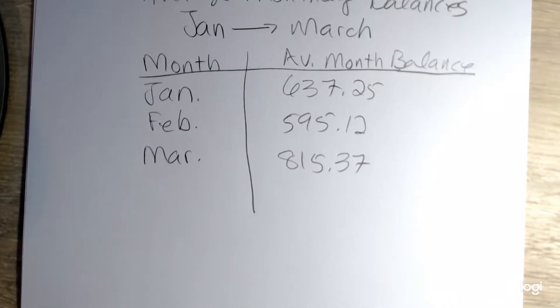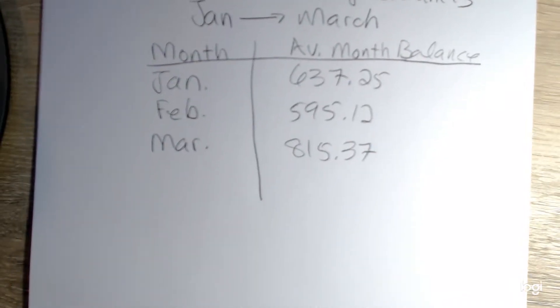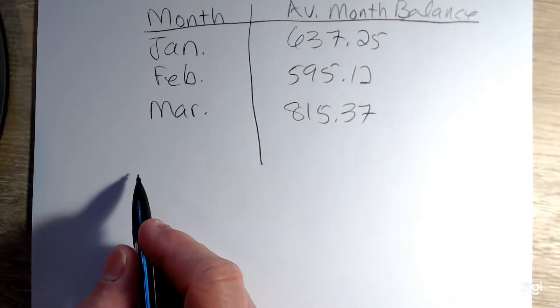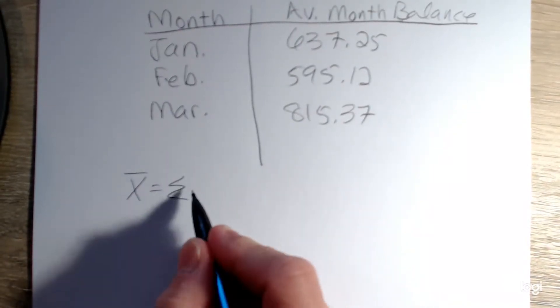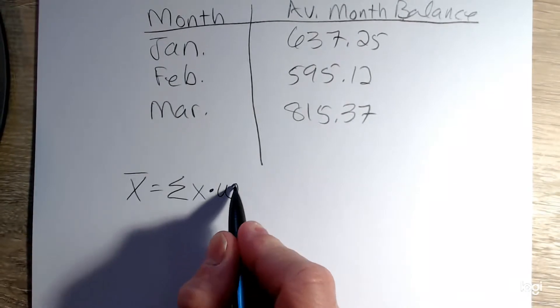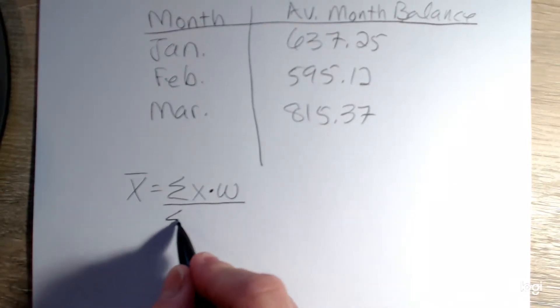To input this into the weighted mean formula - the weighted mean formula is the sum of the x values times their weight divided by the sum of the weights.